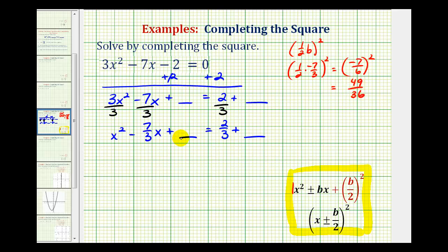We need to add 49/36 here to make this a perfect square trinomial. If we add this to the left side of the equation, we must do the same to the right side. Now we're going to factor this, which will be a perfect square trinomial, and then we'll add these terms on the right.